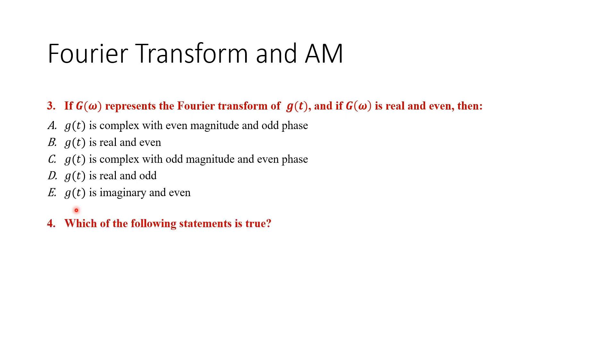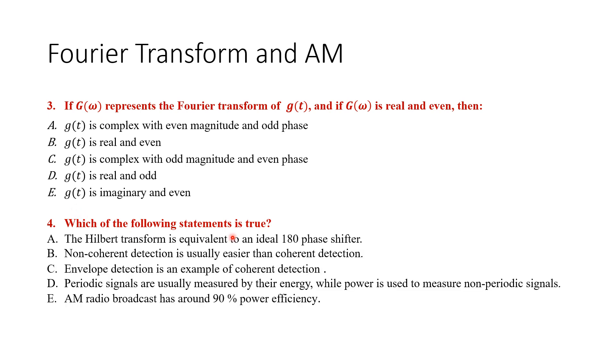Now for question number four, which of the following statements is true? The Hilbert transform is equivalent to an ideal 180 degree phase shifter. Non-coherent detection is usually easier than coherent detection. Envelope detection is an example of coherent detection. Periodic signals are usually measured by their energy while power is used to measure non-periodic signals. AM radio broadcast has around 90 percent power efficiency. Mark your answer A, B, C, D, or E.